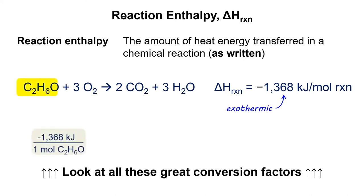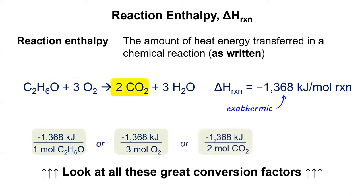This conversion factor tells me that if I burn one mole of C2H6O according to the reaction above, it will release 1,368 kilojoules of energy. It also tells me that if I react three moles of oxygen according to the reaction above, it would release 1,368 kilojoules of energy. Likewise, in order to form two moles of CO2 according to the reaction above, the reaction will release 1,368 kilojoules of energy. The same is true to form three moles of H2O.